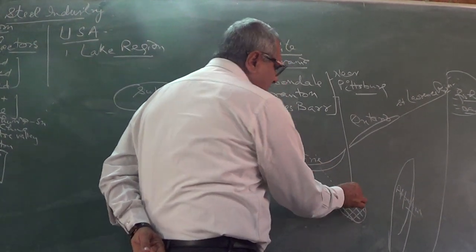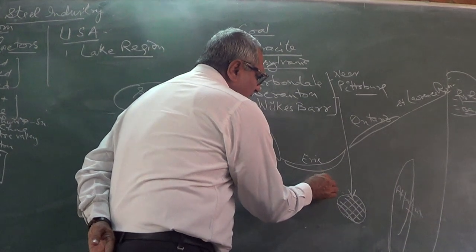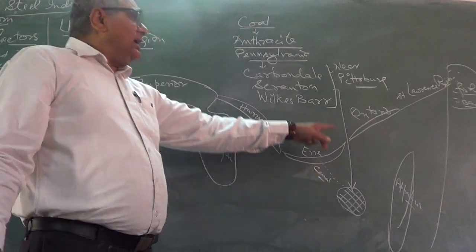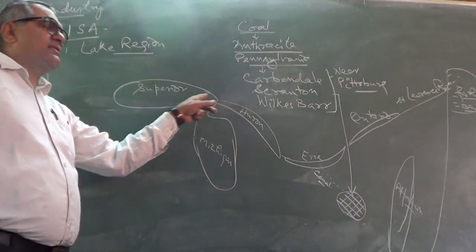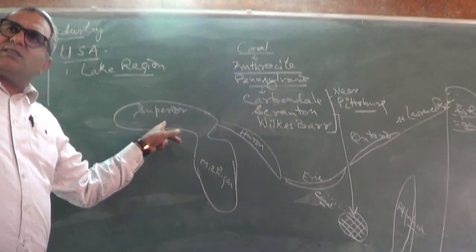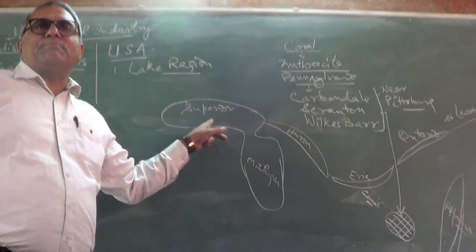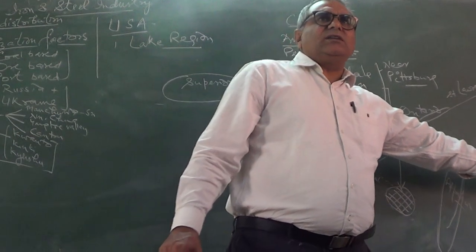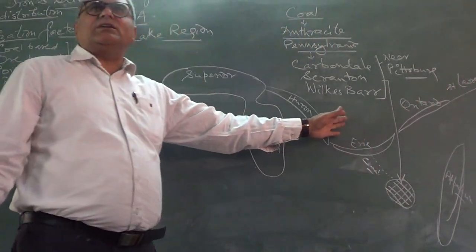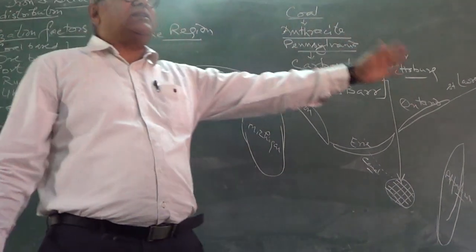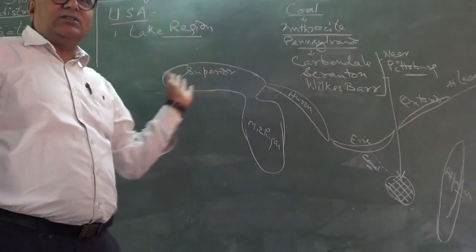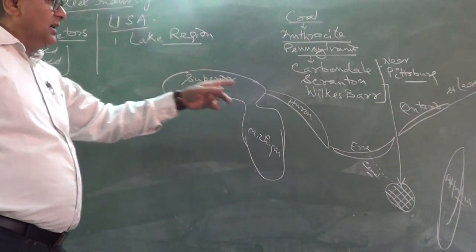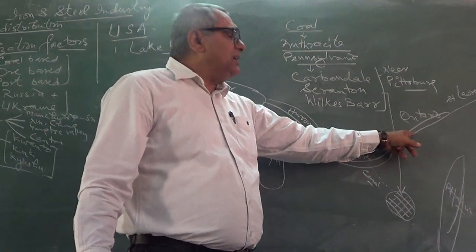Lake Erie is connected by the Erie Canal, which provides navigational facility to transport raw material. These lakes provide navigational facility — from the Atlantic, any heavy or bulky raw material may be transported to or from this region. Lake Erie and Lake Ontario are both navigational lakes.